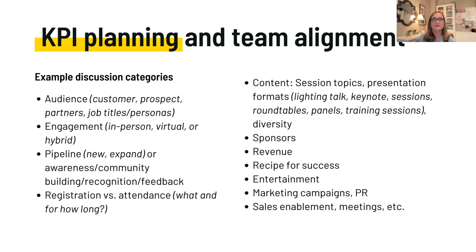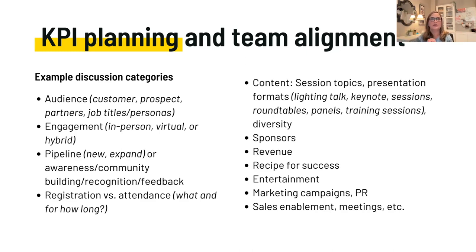Here are some example discussion categories to go through with your team. I put this in a spreadsheet and we discuss the audience — is it for customers, prospects, or a community? How are we going to engage people? Does it make sense to be in person, or is our audience globally spread across London, New York, San Francisco? Is it going to be virtual because we're going green or being fiscally responsible, or are we doing hybrid?